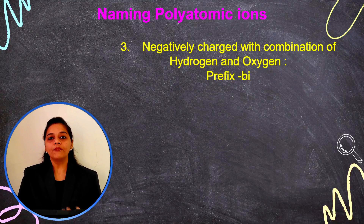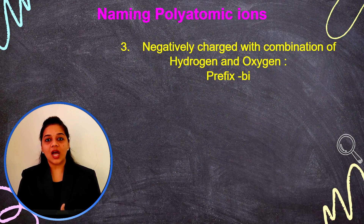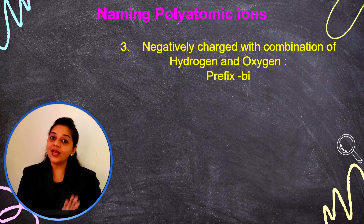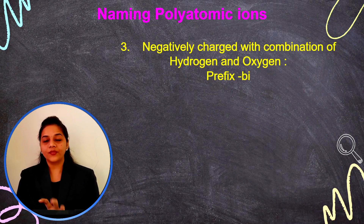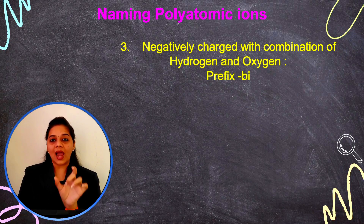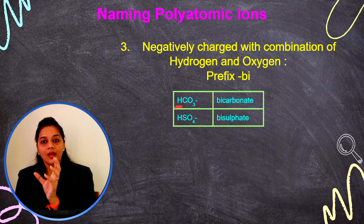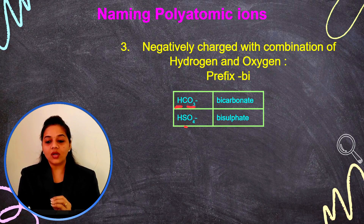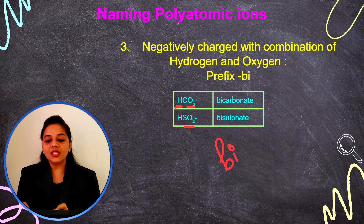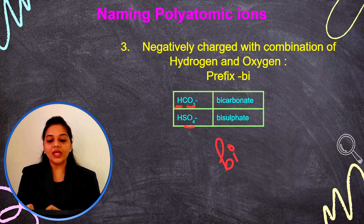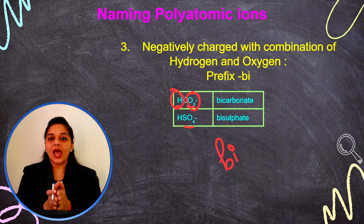Now, for negatively charged polyatomic ions that are a combination of both oxygen and hydrogen: when hydrogen is connected with a radical like carbonate or sulfate, we add 'bi-' before the radical name. For example, bicarbonate and bisulfate. So whenever there is a combination of hydrogen and oxygen together, we add the prefix 'bi-': bicarbonate, bisulfate.